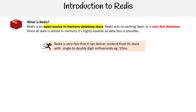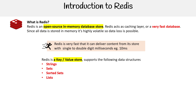Redis is a key-value store, so it's not like using a relational database. It has its own data structures and data types: string sets, sorted sets, lists, hashes, bitmaps, bit fields, hyper logs, geospatial indexes, and streams. The ones highlighted in red are especially worth going over because they're worth your time.